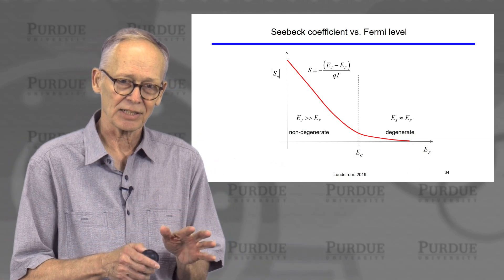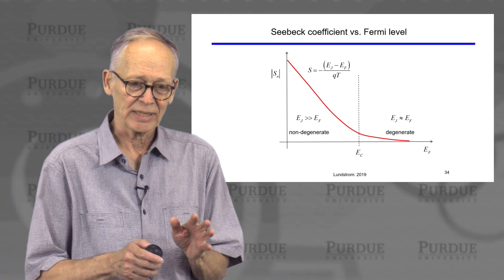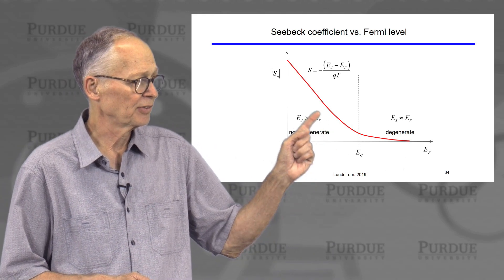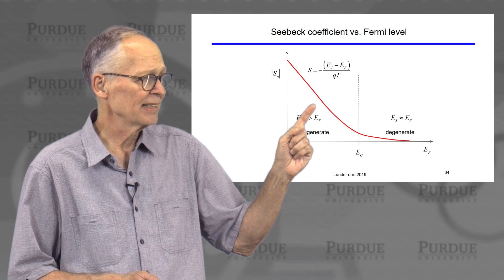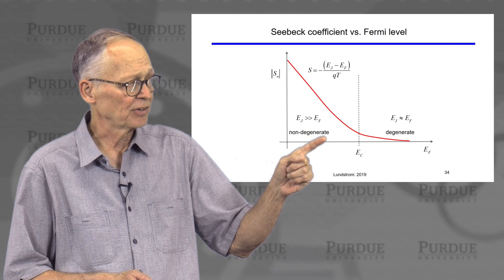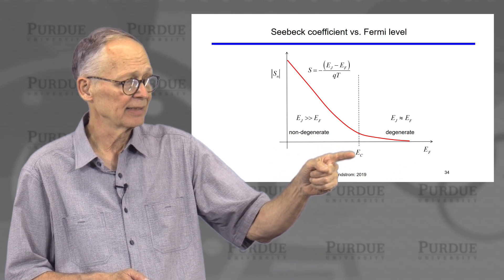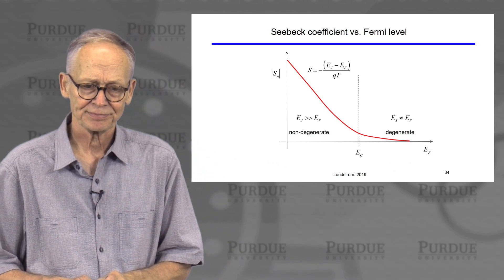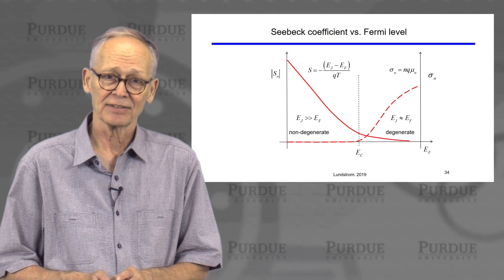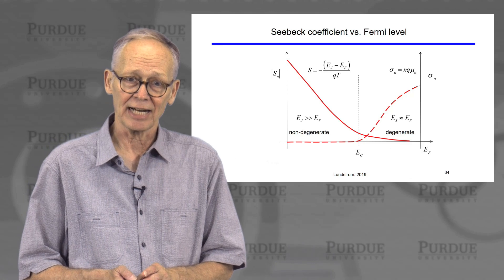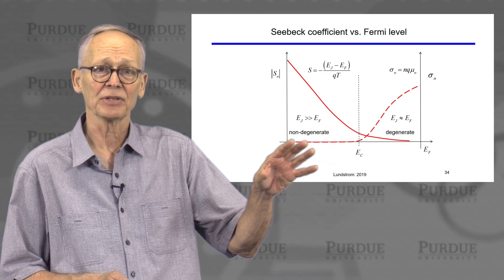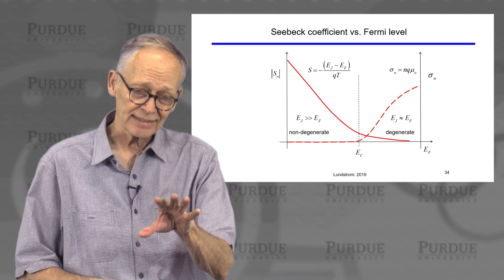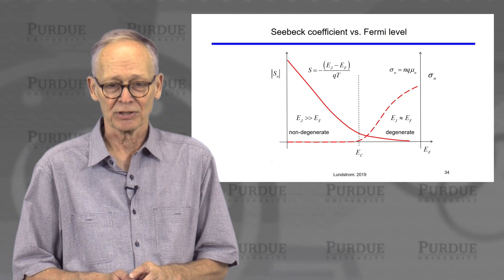Just as we sketched electrical conductivity versus Fermi level, we can now sketch Seebeck coefficient versus Fermi level. When the Fermi level is well below the conduction band, the magnitude of the Seebeck coefficient is large. As the Fermi level gets closer to the conduction band and then deep inside, the Seebeck coefficient gets smaller and smaller, approaching zero. Comparing that to conductivity versus Fermi level, you'll note it's just the opposite — conductivity increases once the Fermi level gets close to the conduction band and continues to increase. This will be important to understand later when we talk about the figure of merit.